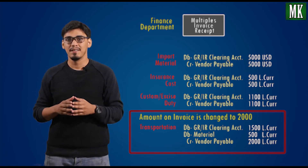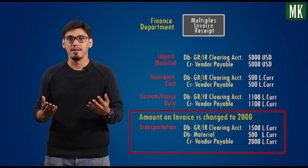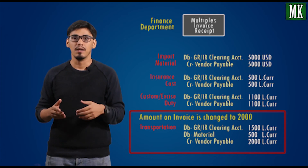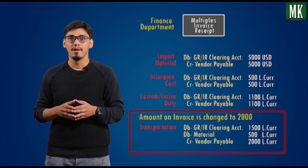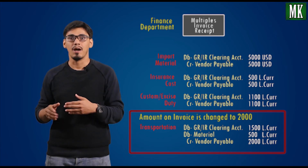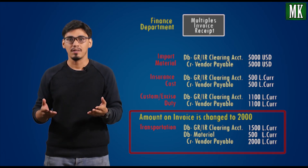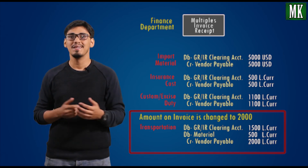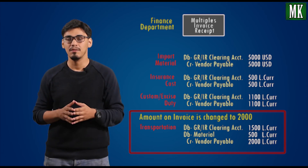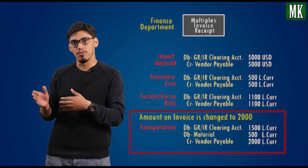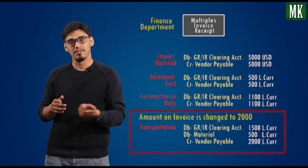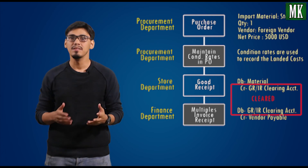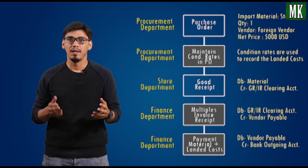If we analyze this entry, we can see that the 500 amount, which is a difference amount for transportation cost, is now incorporated into the material. The transportation cost was previously booked at 1500 and is now updated to the actual invoice amount. In case the material is consumed or is not available in inventory, this 500 difference goes to the price difference account rather than the material account. If we see the balance of the GRIR account, we can see the account balance becomes zero.